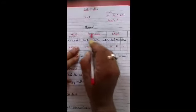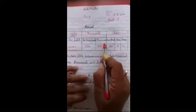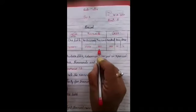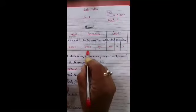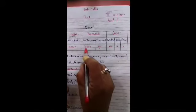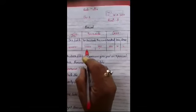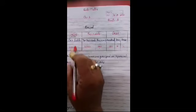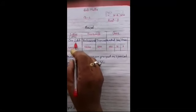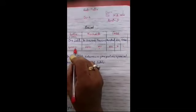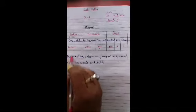Isi tarike se ek group hai thousand ka, uske andar aata hai thousand or ten thousand. Yarni thousand mein aati hai four digit or ten thousand mein aati hai one, two, three, four, five digits aati hai. Isi tarike se ek group hai lakh ka, uske andar ek lakh, one lakh. To iske andar kitne digit aayegi? One, two, three, four, five, six. To ye six digit aayegi.